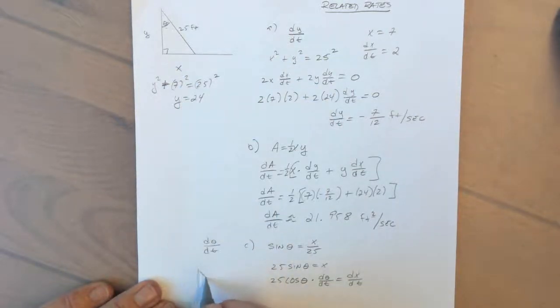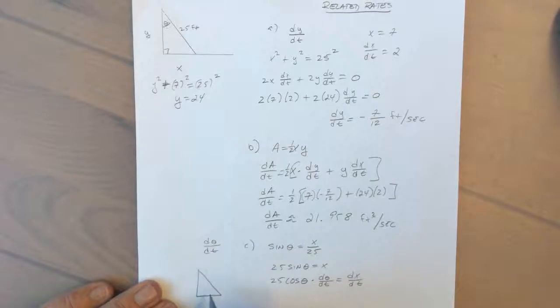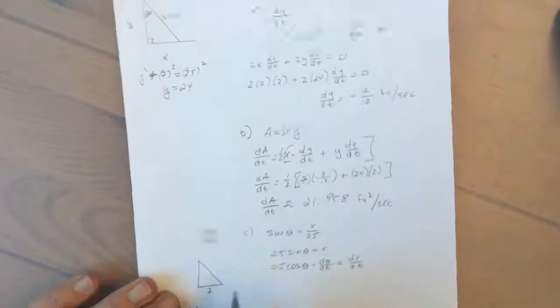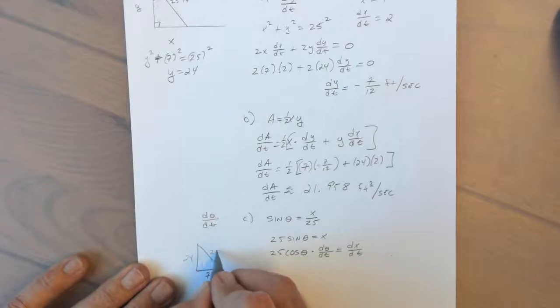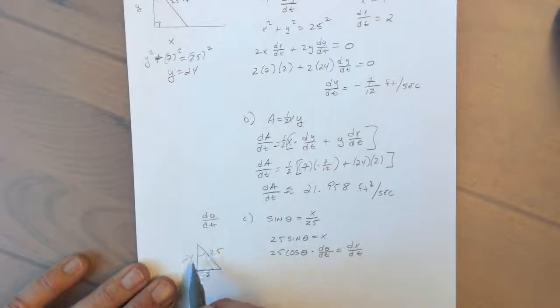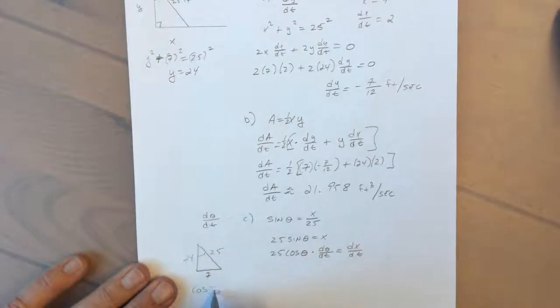And I'll redraw the triangle down here. At that moment in time, we know that that side is 7, this side is 24, and this side is 25. So the cosine of that angle, which would be the adjacent side over the hypotenuse, so the cosine of theta is 24 over 25.